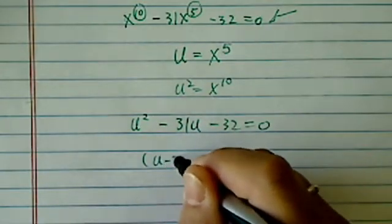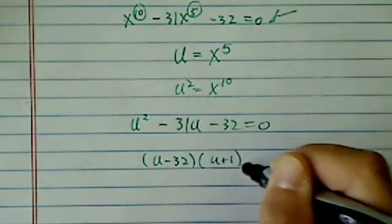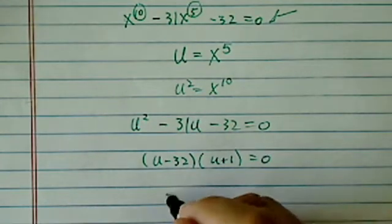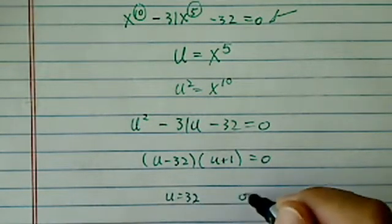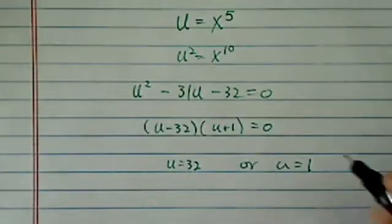This is pretty easy to factor: u minus 32 times u plus 1 equal to 0. So u is equal to 32 or u is equal to minus 1.